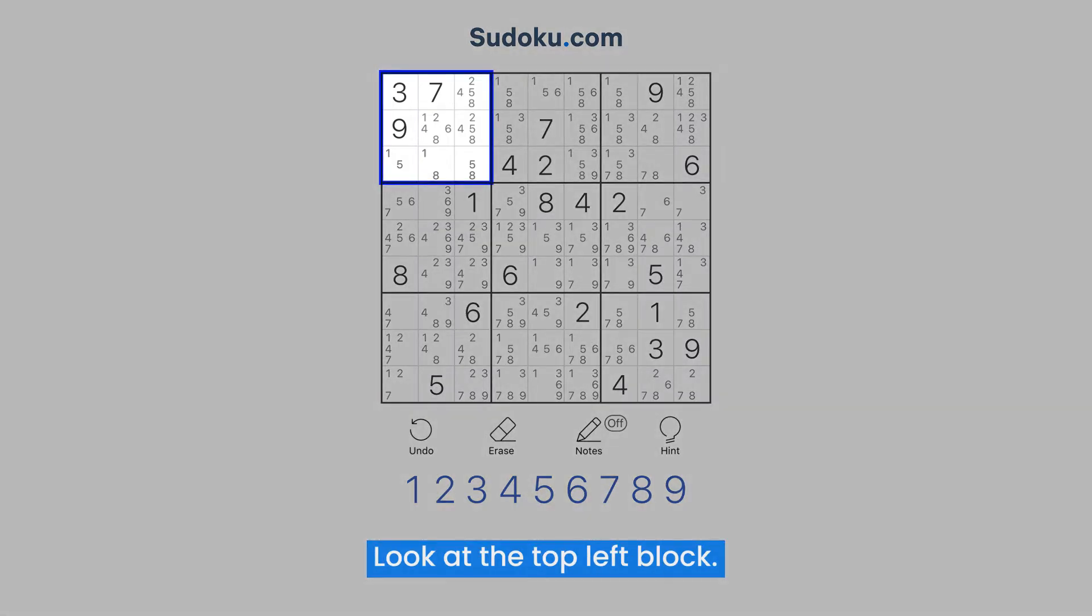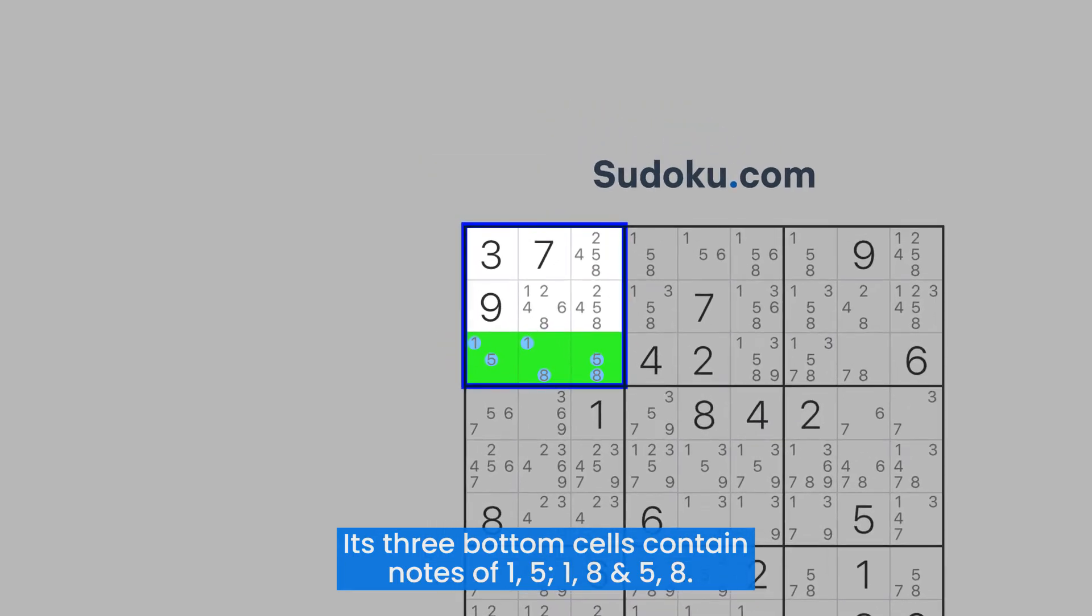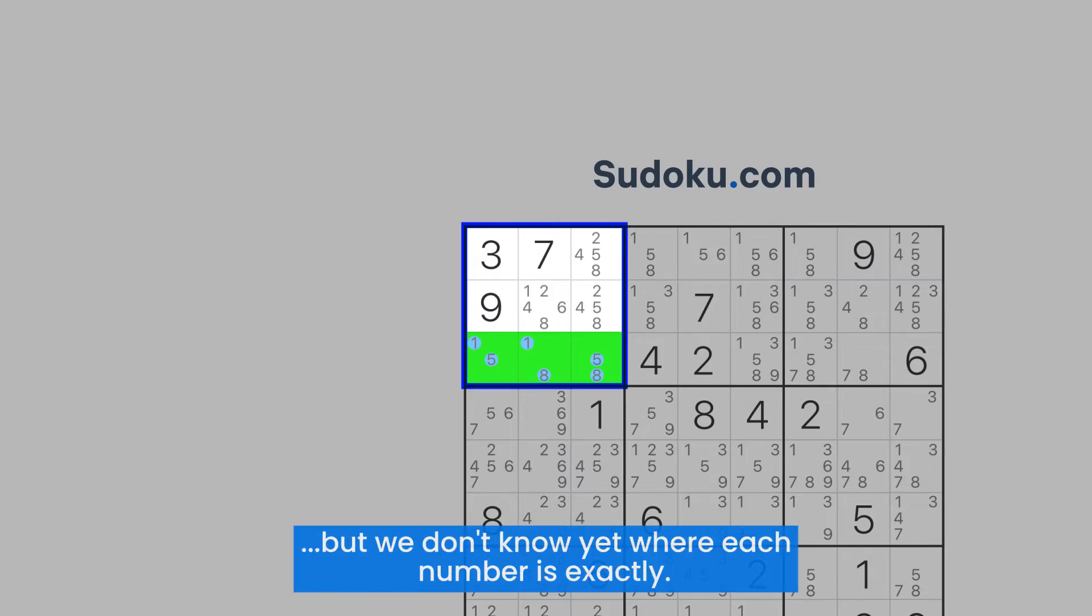Look at the top left block. Its three bottom cells contain notes of 1, 5, 1, 8, and 5, 8. This means that these cells have numbers 1, 5, and 8 in them, but we don't know yet where each number is exactly.